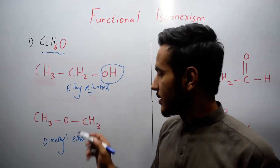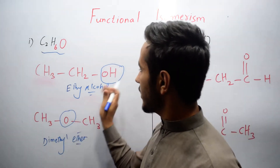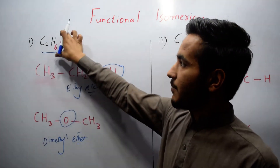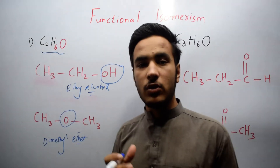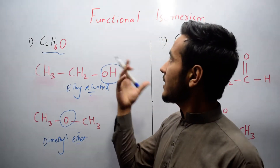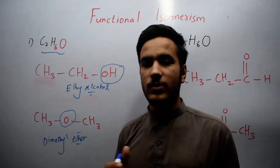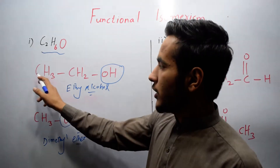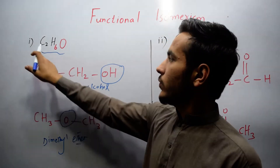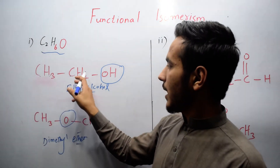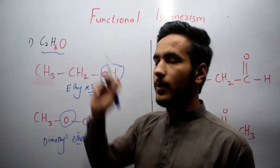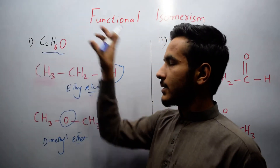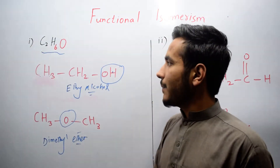In dimethyl ether the functional group is O, while in ethyl alcohol it is OH. These two compounds have the same molecular formula but different functional groups — this is functional group isomerism. Both have two carbon atoms and six hydrogen atoms, confirming the same molecular formula C2H6O.